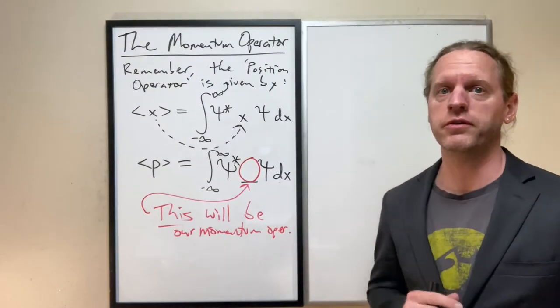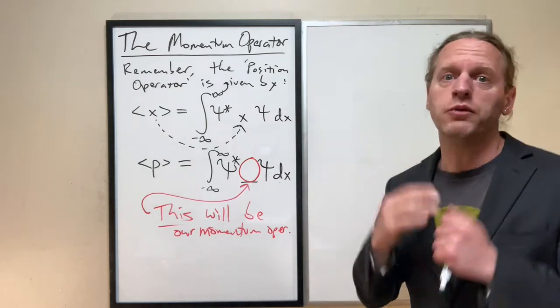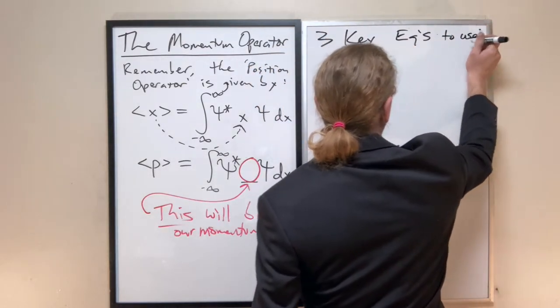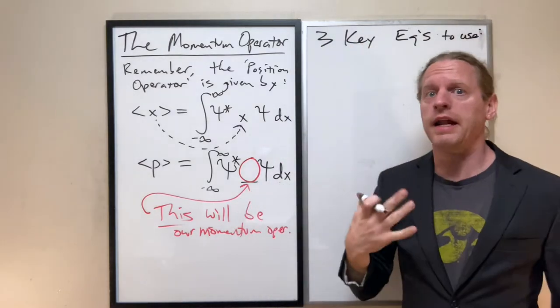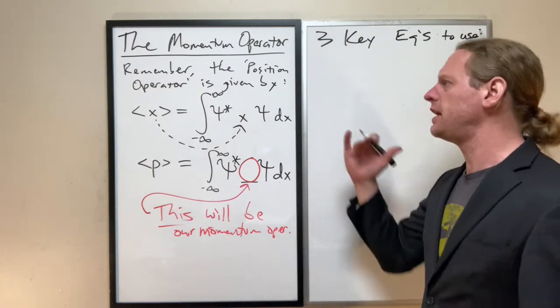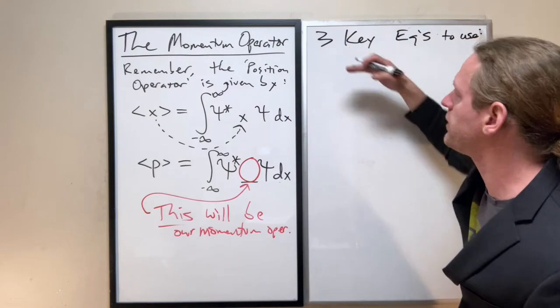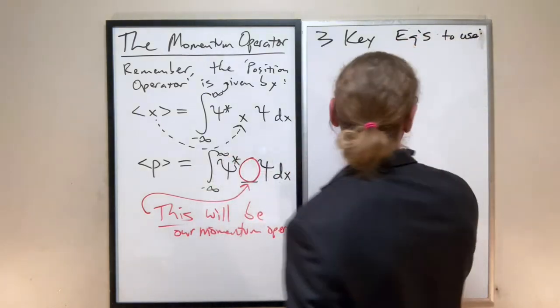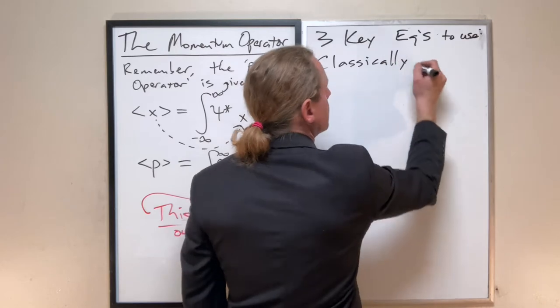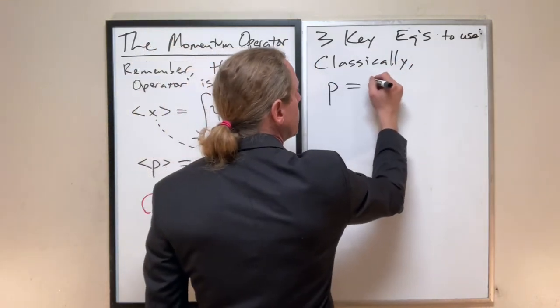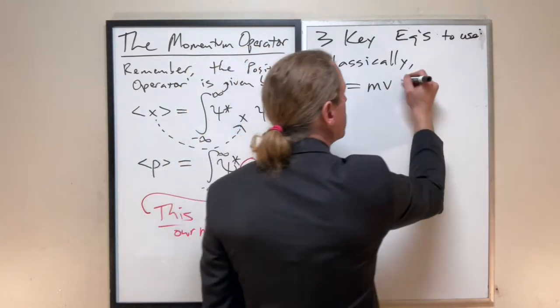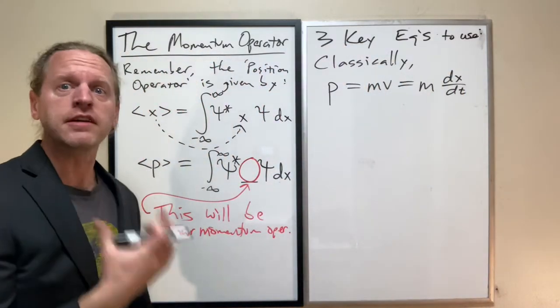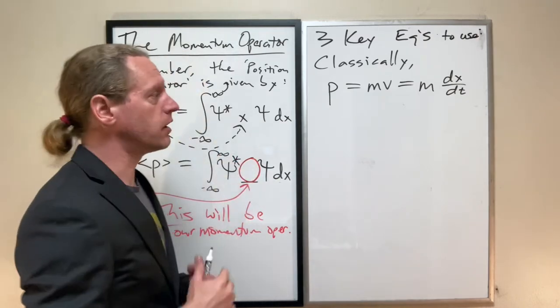There's three key equations that we're going to need to use here. First is basically defining what is our question or defining what it means to be momentum in the first place. Make very sure that you understand each of these three things or where we're gonna pull them from when we need to. First off, classically we know that we define momentum as simply mv, or let's be more clear, that's m times dx/dt for one dimension.